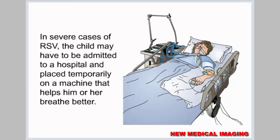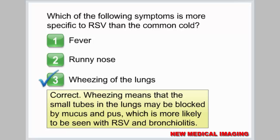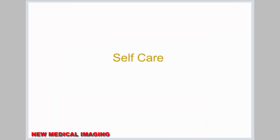In severe cases of RSV, the child may have to be admitted to a hospital and placed temporarily on a machine that helps him or her breathe better. Wheezing is more specific to RSV than the common cold — it means that the small tubes in the lungs may be blocked by mucus and pus, which is more likely to be seen with RSV and bronchiolitis.